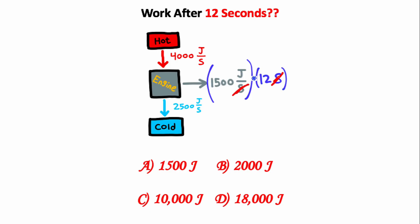Multiplying these two numbers, I can cancel the seconds, and 1500 times 12 should give you a value of 18,000 joules of work. So option D is the solution to this problem.